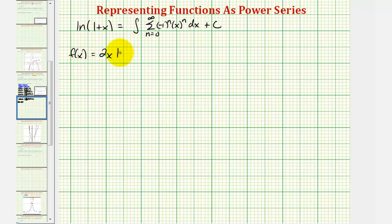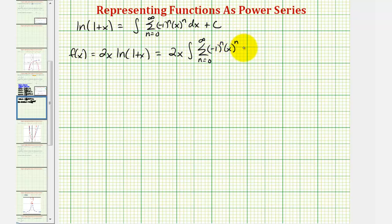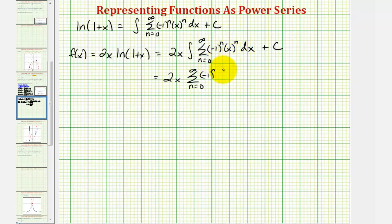Because f(x) = 2x · ln(1+x), this equals 2x times the integral of the summation from n=0 to infinity of (−1)^n · x^n dx + c. Now we integrate this power series with respect to x, giving us 2x times the summation from n=0 to infinity of (−1)^n · x^(n+1) / (n+1), plus c.